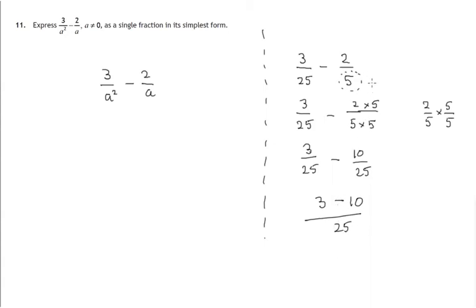So the crucial stage here is to get the denominators the same, get the denominators the same. And in this case, to get a squared there, we would have to multiply by a,